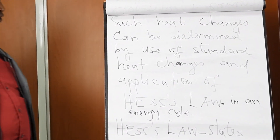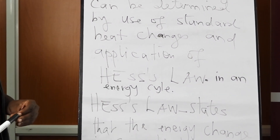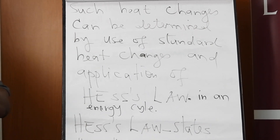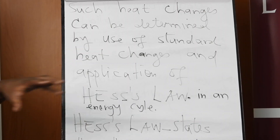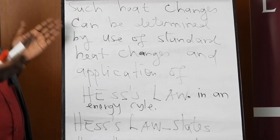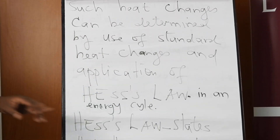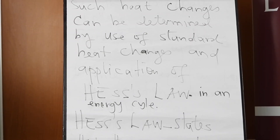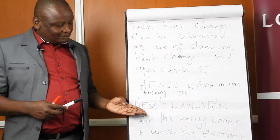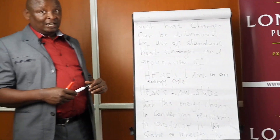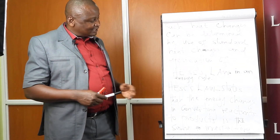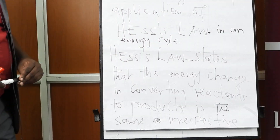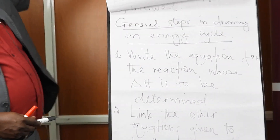We apply a concept called Hess's Law. Because heat of formation cannot be determined experimentally, you combine other standard enthalpy changes that can be determined experimentally in what we call an energy cycle, to come up with a way of determining such an energy change that cannot be done experimentally. Hess was a scientist who discovered this and solved that problem.